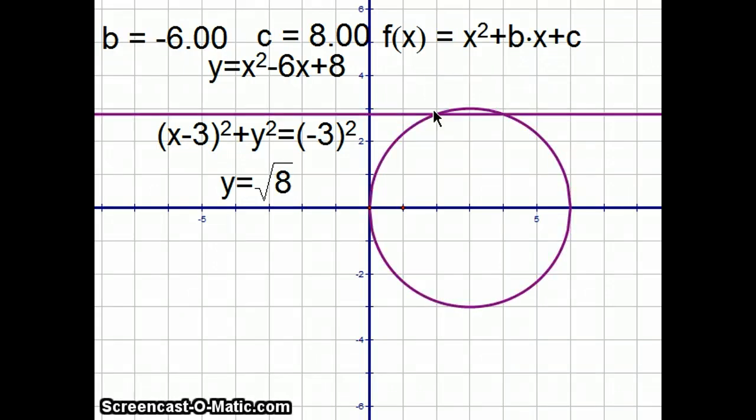This circle and this line intersect the x-axis at the same points, 2 and 4, and they solve the same equation. I'm going to show you why.